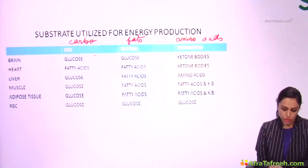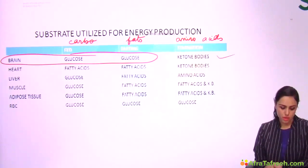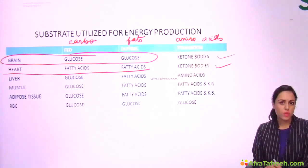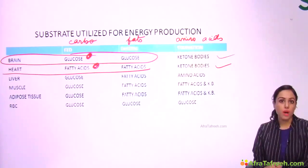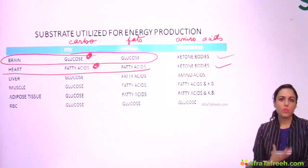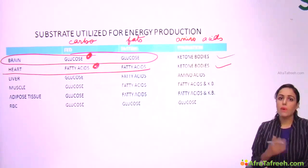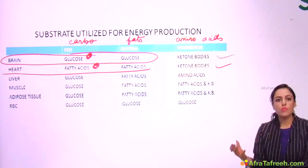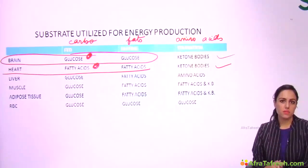Note that the brain uses glucose in the fed and fasting states, and shifts to ketone bodies in starvation. The heart uses fatty acids in the fed and fasting states, and shifts to ketone bodies in severe starvation. Now, why is glucose the main fuel for the brain in the fed state, and fatty acids the main fuel for the heart? Because during the 24 hours of a day, we rest the brain — we sleep — but we never rest the heart; it works 24 hours. So a fuel that gives more energy per molecule, that is fats, is assigned as the main fuel for the heart.